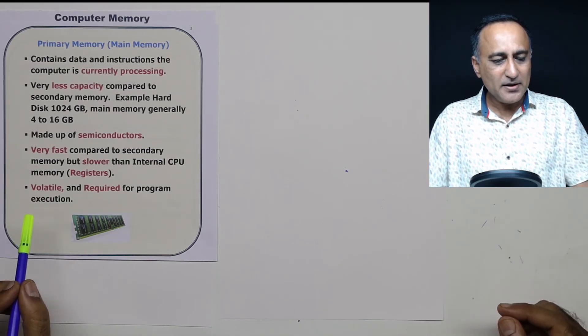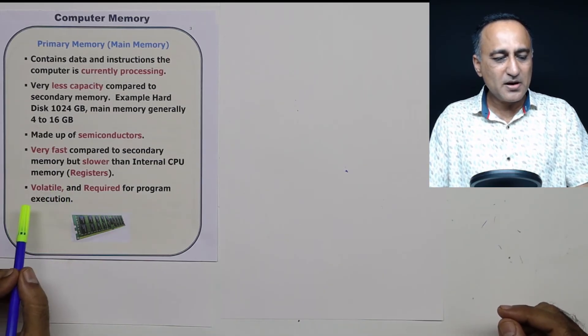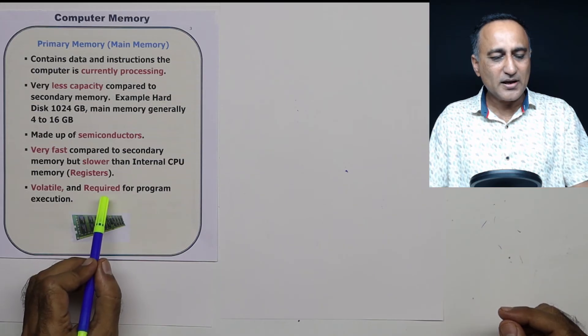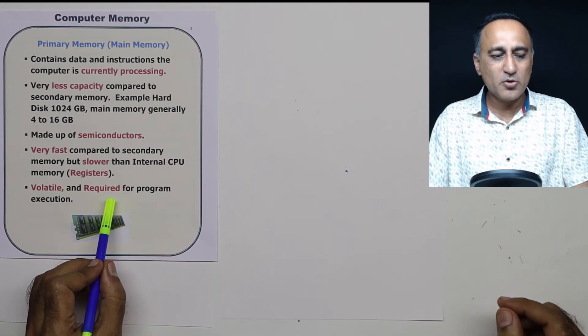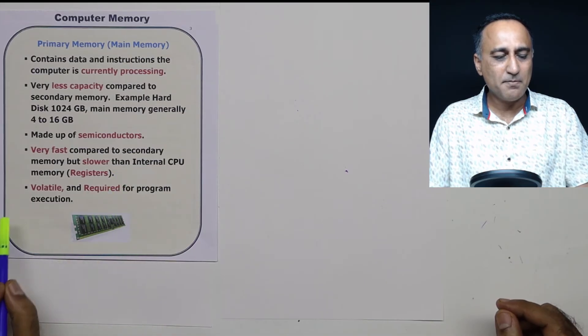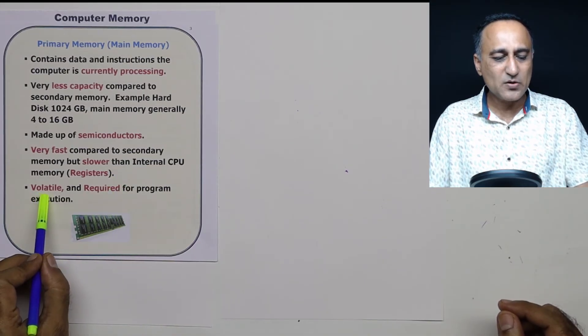Now, most important, why you require main memory, because you cannot execute a program using the von Neumann architecture without having the RAM or the main memory. Important thing is this is volatile.